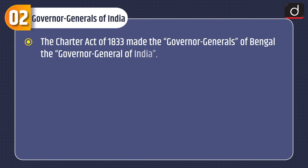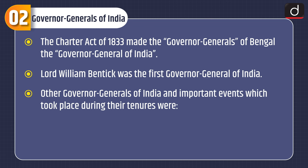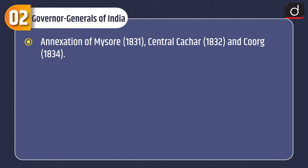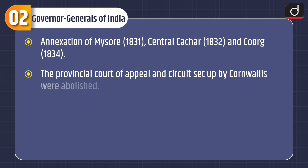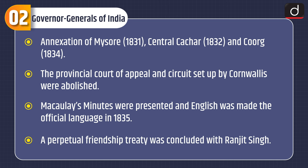Now moving on to Governor Generals of India: the Charter Act of 1833 made the Governor General of Bengal the Governor General of India. Lord William Bentinck was the first Governor General of India, 1828–1835. The practice of Sati was abolished. Annexations of Mysore in 1831, Central Cachar in 1832, and Coorg in 1834 took place. The Provincial Courts of Appeal and Circuits set up by Cornwallis were abolished. Macaulay's minutes were presented and English was made the official language in 1835. A perpetual friendship treaty was concluded with Ranjit Singh.